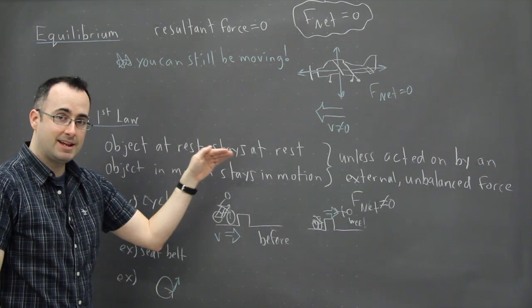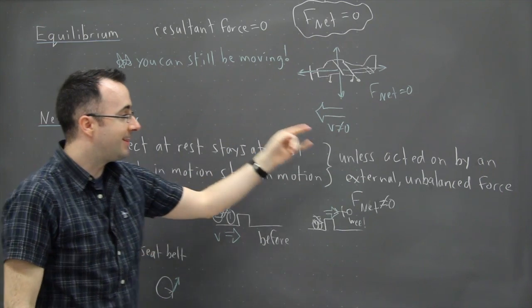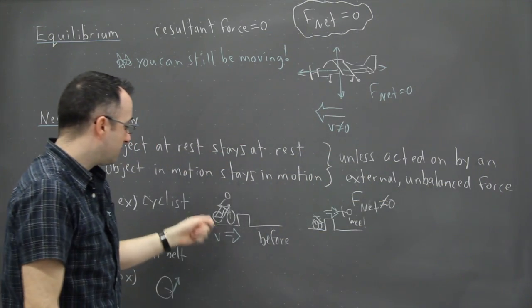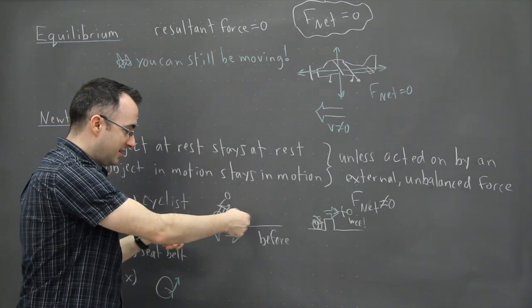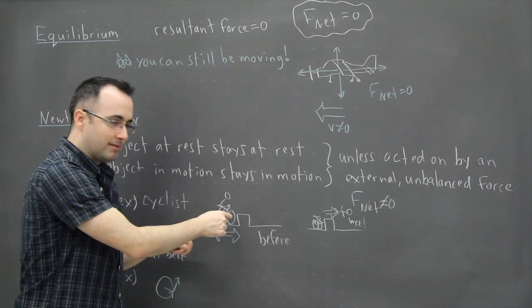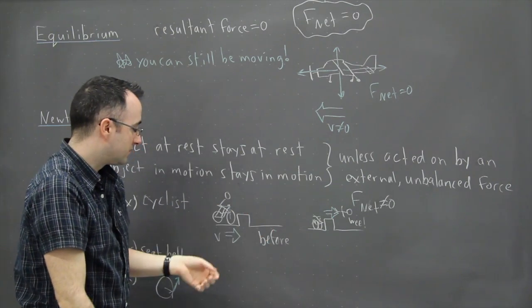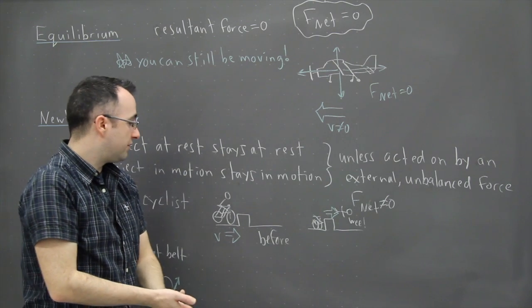But Newton's first law is still very important. Things at rest tend to stay at rest. Things that are moving tend to stay moving unless there is an external unbalanced force. In the case of my cyclist, the external unbalanced force was basically the force of this wall on the bicycle. The bicycle hitting the wall, so I of course go flying. So hopefully that's helpful.